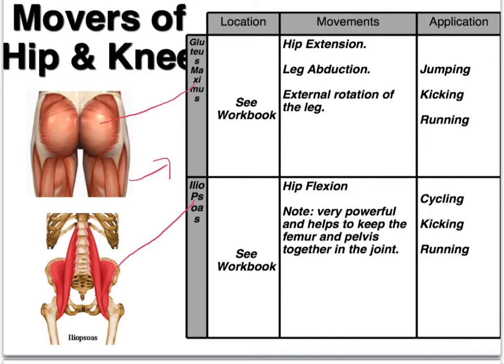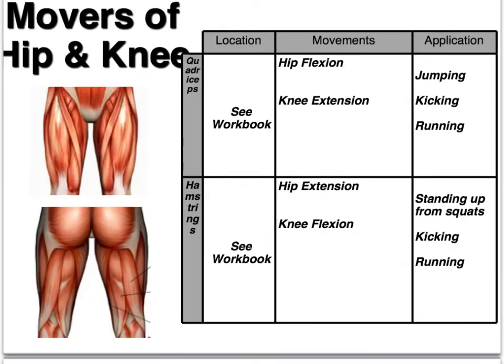You may have known the iliopsoas muscle as a hip flexor last year. Now we're looking at an anterior view of your legs and we have the quadricep muscle. Quad stands for four — the quadricep is actually made up of four muscles. It's collectively the most powerful muscle group in the body, and it is responsible for hip flexion and knee extension.